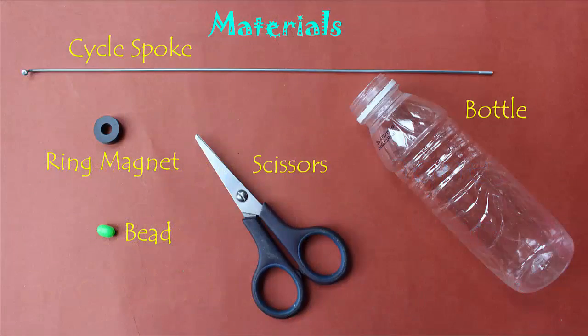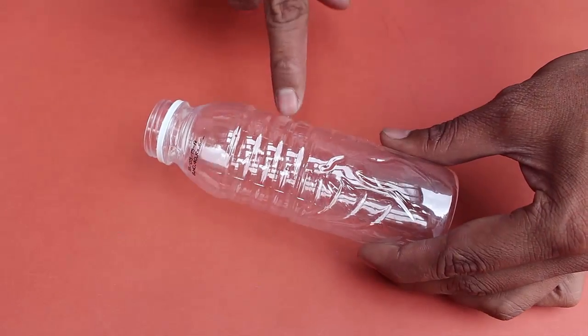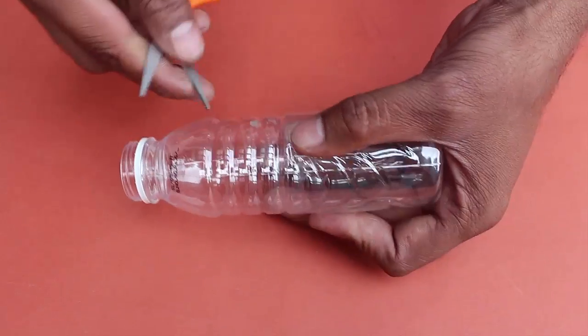A bicycle spoke, ring magnets, a bead, a small plastic bottle, and scissors. On this plastic bottle you can see a few circular rings.